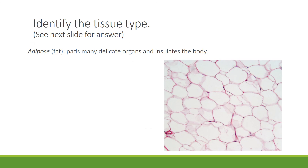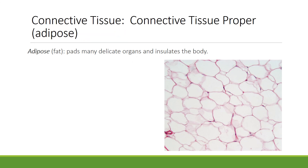Can you identify this tissue? The example from connective tissue proper is adipose tissue, also known as fat. Its main job is to pad many delicate organs and to insulate the body.